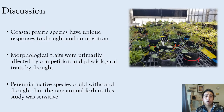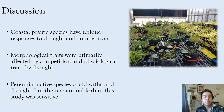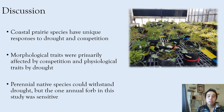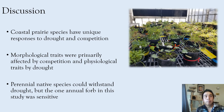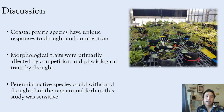Overall, we found coastal prairie species have a unique response to both drought and competition, and it's important to explore a diverse array of species responses to better understand how to conserve native diversity in the future. We found morphological traits were primarily affected by competition and physiological traits primarily affected by drought. This could be because physiological traits respond more instantaneously than morphological traits, which take time to develop, and drought happens immediately affecting immediate plant development. Perennial species could withstand drought, but the one annual forb in our study was sensitive to drought, further highlighting the need to study more annual forbs and their responses to both drought and competition.